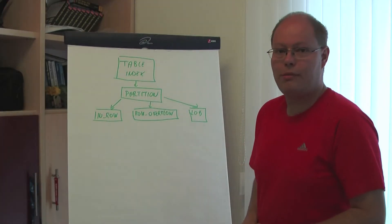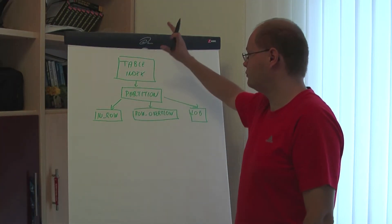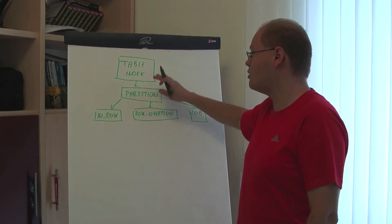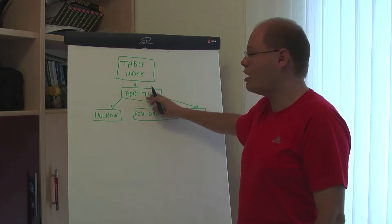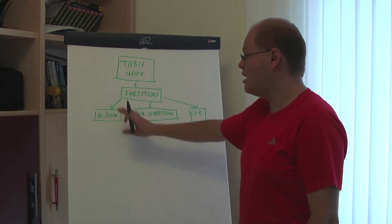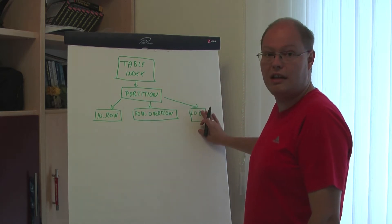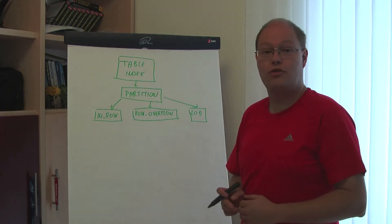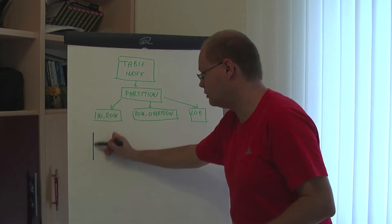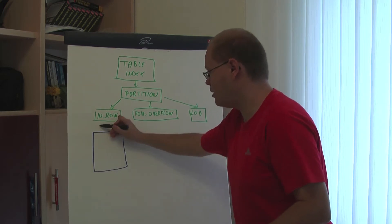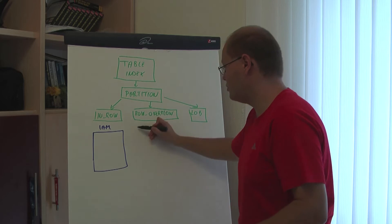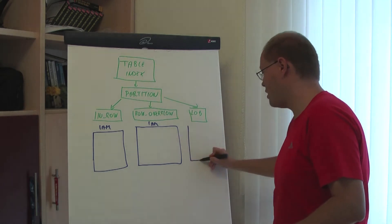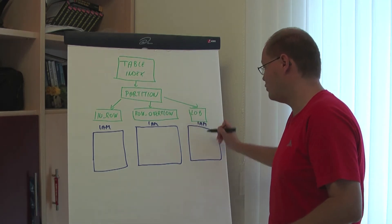As you already know from our last SQL Server Quickie, SQL Server creates for every table and every index at least one partition. Inside that partition we can have up to three allocation units: In-row, Row Overflow, and LOB data allocation units. For each of those individual allocation units, SQL Server creates a so-called IAM page — one IAM page per allocation unit.